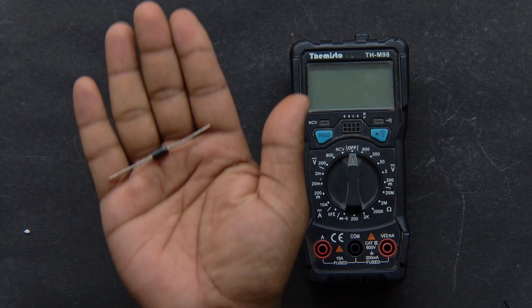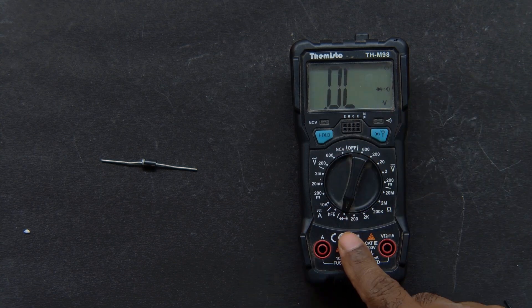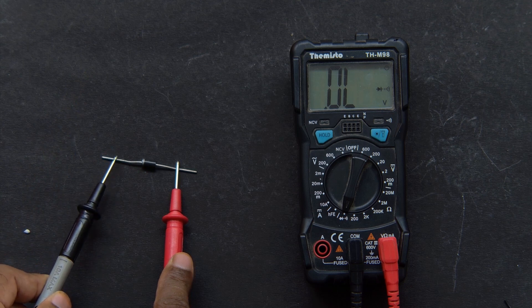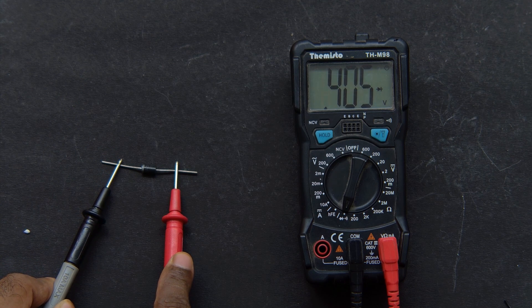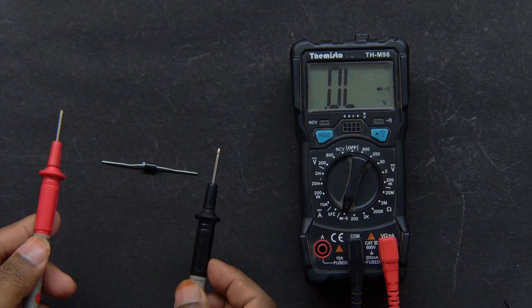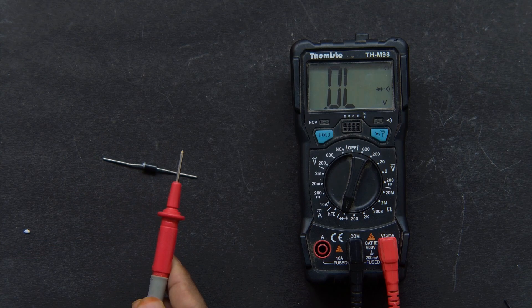Some multimeters also support diode testing. Turn the dial to the diode symbol. Now connect the red probe to the anode and the black to the cathode. If the diode is working, the meter will show a small voltage drop. Reverse the probes and it should show OL, meaning no current is flowing backward. This tells you the diode is functioning properly.